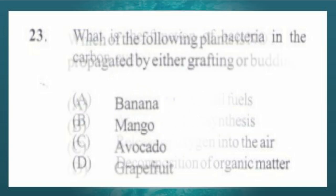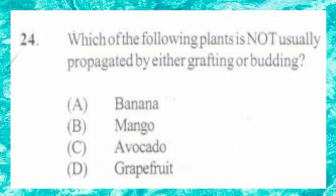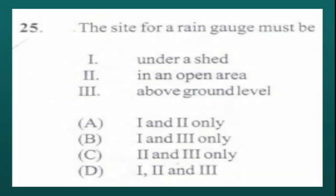Question number 24. Which of the following plants is not usually propagated by either grafting or budding? A. Banana, B. Mango, C. Avocado, D. Grapefruit. The answer is A, banana. Question number 25. The site for a rain gauge must be: 1. Under a shed, 2. In an open area, 3. Above ground level. A. 1 and 2 only, B. 1 and 3 only, C. 2 and 3 only, D. 1, 2 and 3. The best answer is C, two and three only.